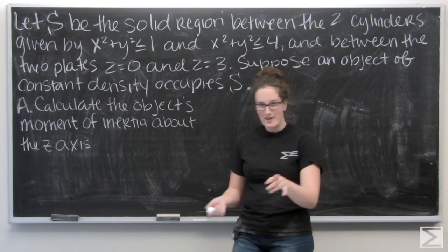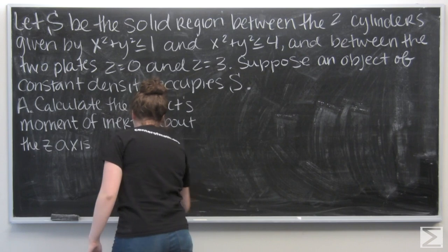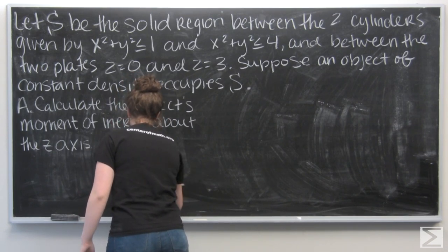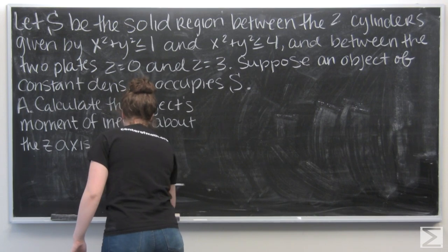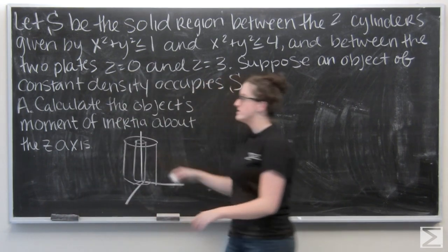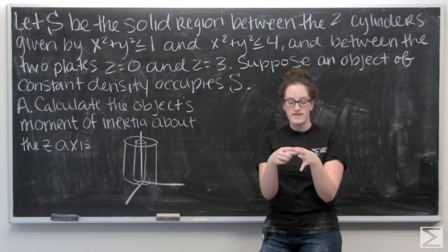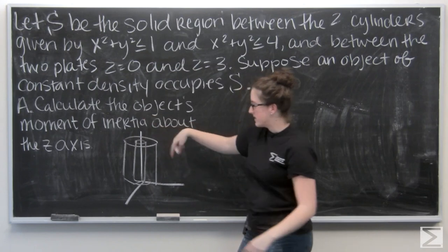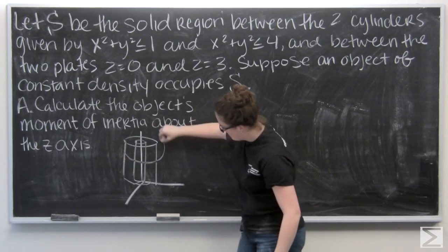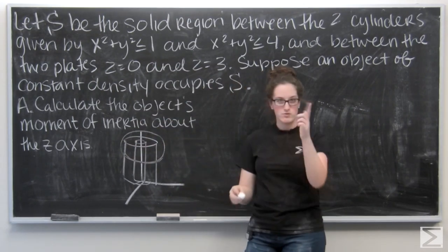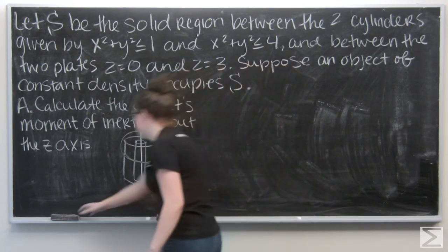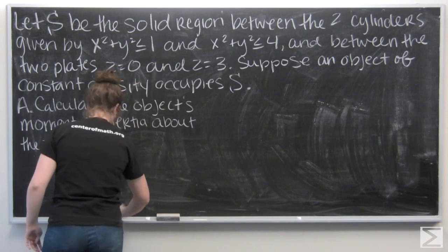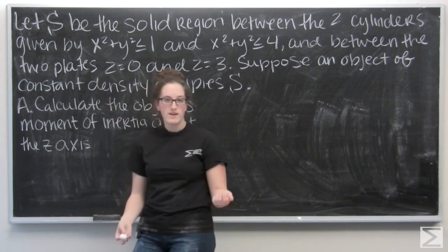Let me draw it. So we have these two cylinders — you can think of it like a bead with a hollow middle part that's rotating. Let's recall how to find moment of inertia.